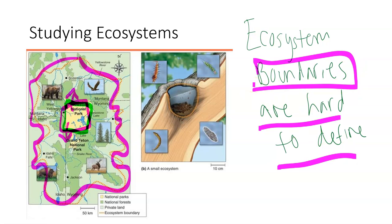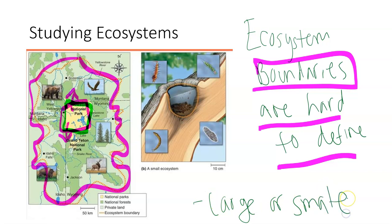Ecosystems can change based on new inputs and outputs into that environment. Another really important thing to note is that ecosystems can be large or small. We have massive ecosystems like the Yellowstone area, but you can also have a very simple ecosystem within a tree, within a puddle, in a pond. That can count as an ecosystem because there are living things and energy moving in and out. So ecosystems aren't just one large area like the Amazon rainforest — it can be more complicated and more small than that.